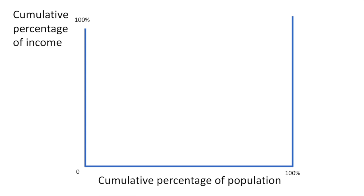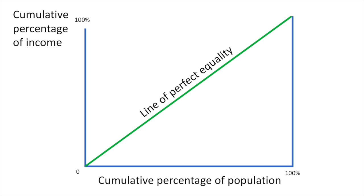Continuing this through the 100th household, we would have perfect equality as each person in society is earning the same amount of income — the first household earns as much as the 100th household. That would look something like this: the line of perfect equality.